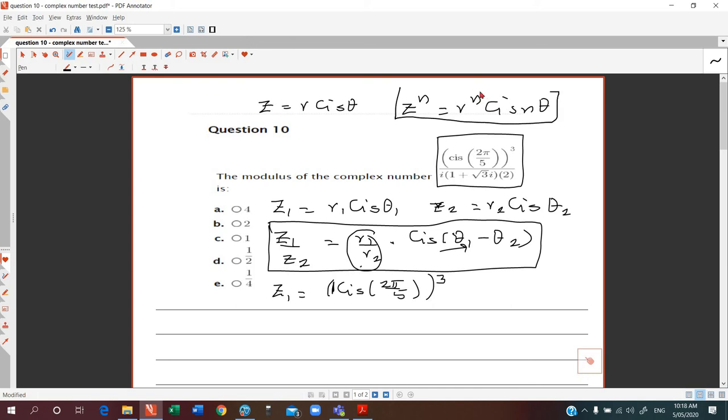These are formulas you should know by heart, or most probably it is in your formula sheet. Using this formula from de Moivre's theorem, this is 1 cis, multiply this 3 to this argument which is going to be 6π/5. Our focus is only on the modulus; the argument is not going to be of any use in this question.